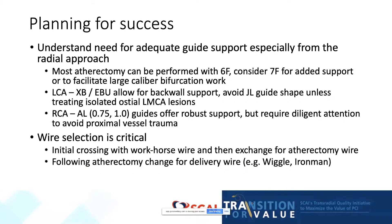When thinking about performing PCI in highly calcified lesions, it's helpful to plan for success, especially anticipating the needs for good guide support and delivery systems. Most atherectomy can be performed via a six-French system, though a seven-French system can be considered for added support or to facilitate large-caliber bifurcation work. When operating from the radial approach and treating left coronary artery lesions, I typically use an XB or EBU system, which allows for back-wall support. I rarely use a JL guide shape unless treating a truly isolated ostial left main lesion. For the RCA, many lesions can be treated with a JR4; however, if added support is anticipated, an AL0.75 or AL-1 can offer robust support but requires diligent attention to avoid proximal vessel trauma.